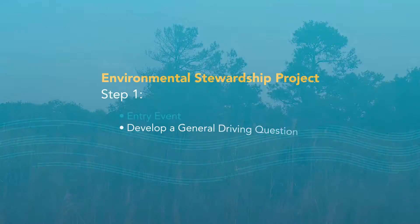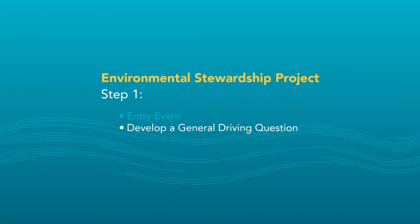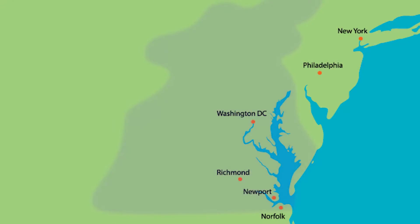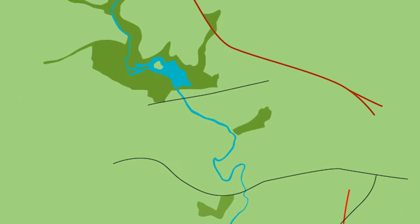The entry event taught us the watershed has many environmental problems and needs help. That led us directly to our general driving question: How can we as environmental engineers design and enact a plan to improve the local watershed?